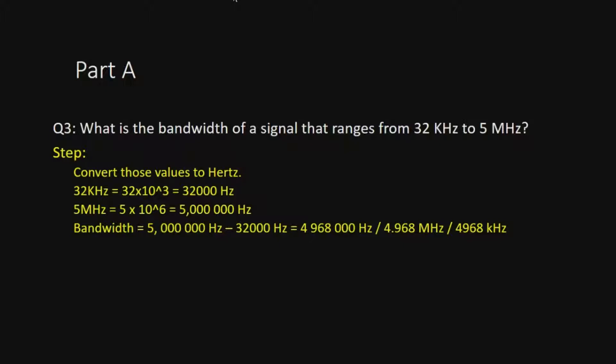Bandwidth means the difference between the highest frequency and the lowest frequency. Based on this question, you should identify that the lowest frequency is 32 kilohertz while the highest frequency is 5 megahertz. Notice the units are different — one is in kilohertz and the other in megahertz — so you need to convert both values into hertz.